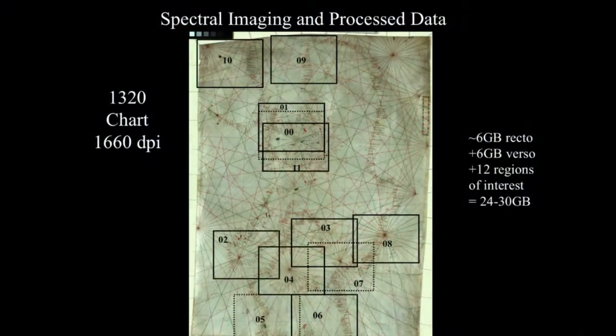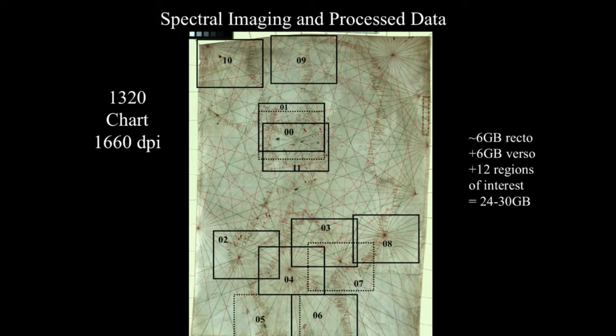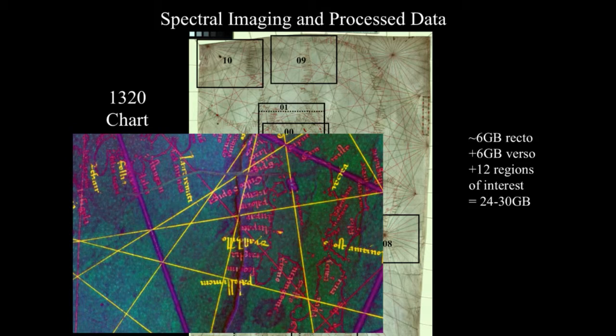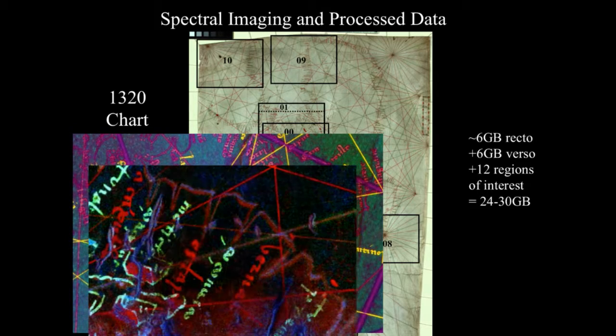We can take that a little bit further and ask how much data do we get from one single document. We can get upwards of 24 to 30 gigabytes. That's a lot of data, but we're public domain — we want to make it accessible. We also want to show the different components of the hidden text that's within our collections that we didn't know was there.